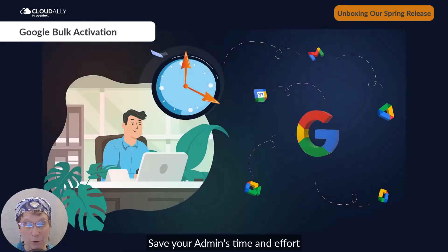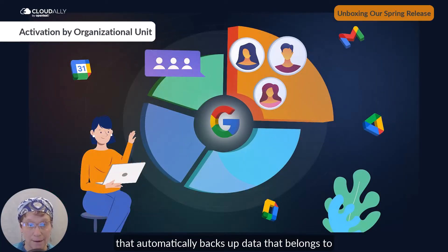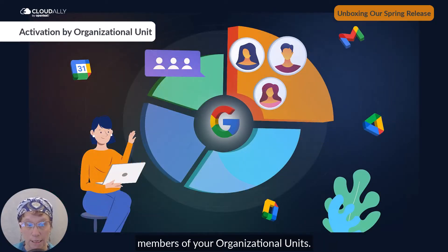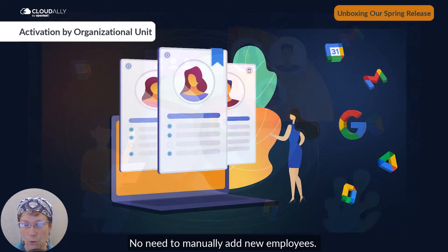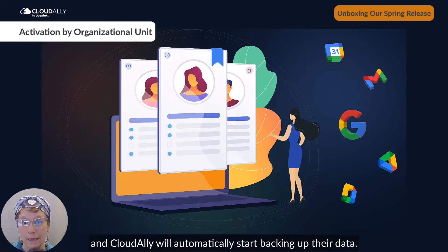Save your admin's time and effort with Google Workspace bulk activation that automatically backs up data belonging to members of your organizational units. No need to manually add new employees — simply place them in a Google organizational unit and Cloud Ally will automatically start backing up their data.